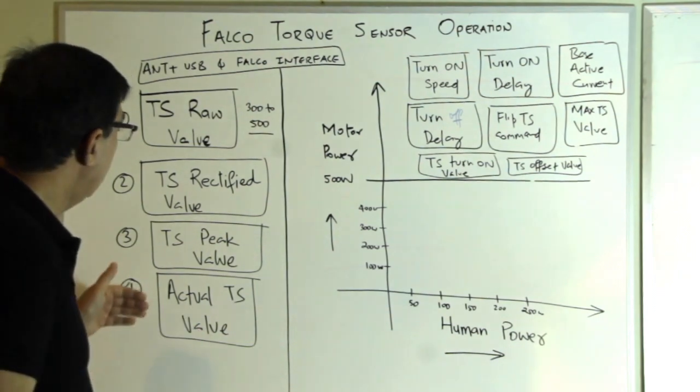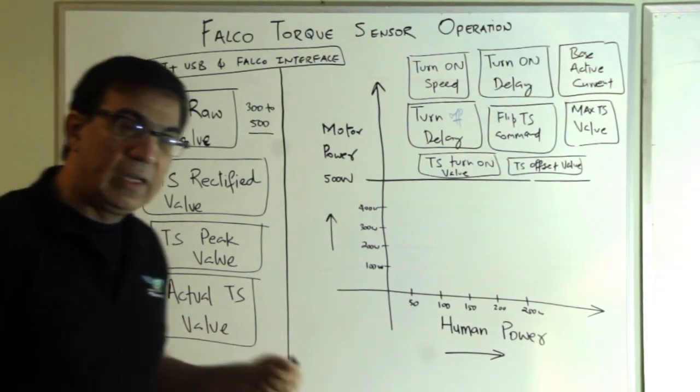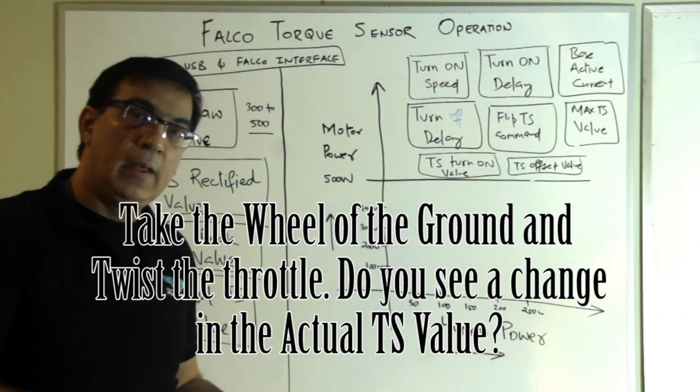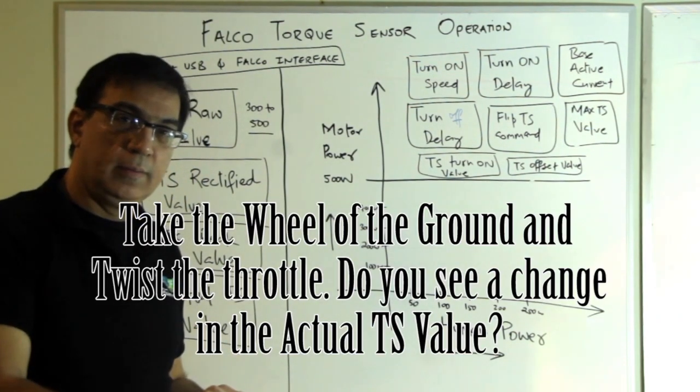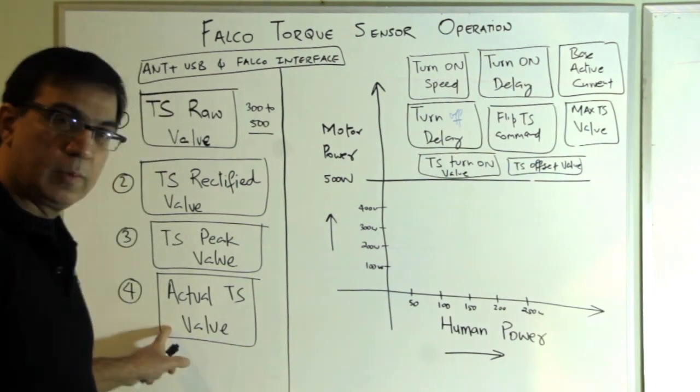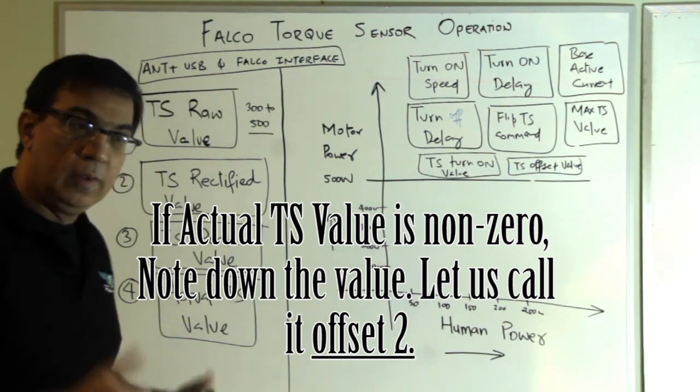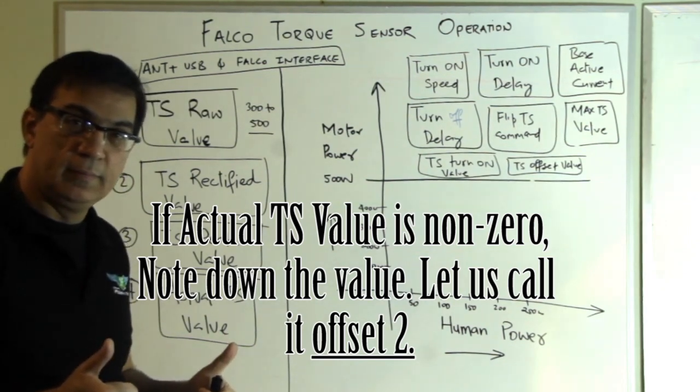The second step is you want to take the wheel off the ground and twist your throttle and look at the actual TS value. If this remains zero, then you're also great.